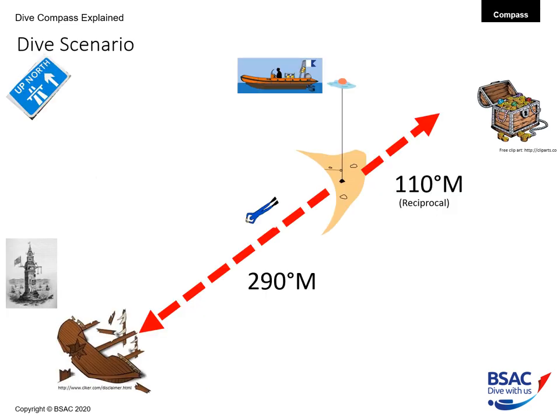Now we're going to learn how to set and orientate both an indirect reading compass and a direct reading compass. We'll look at the indirect reading compass first through a simple dive scenario. We're going to find ourselves on a rib, take it to a shot line, and go down the shot line. The dive coxswain will tell you one of two things.